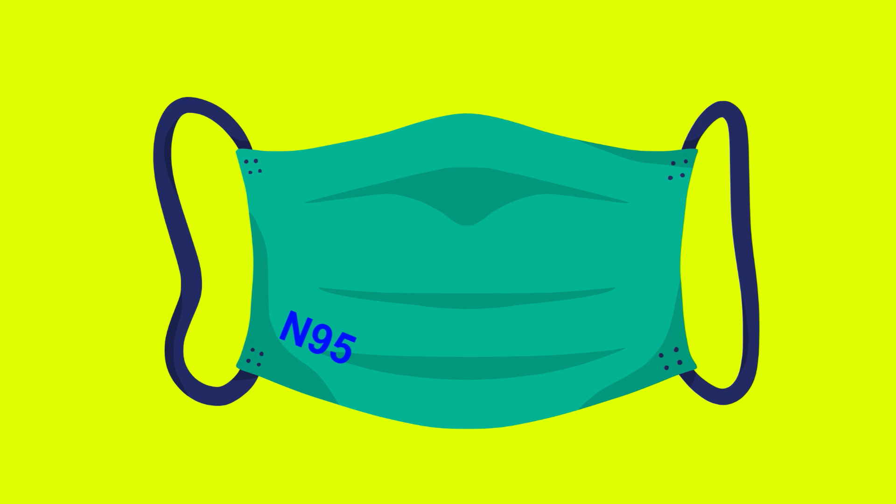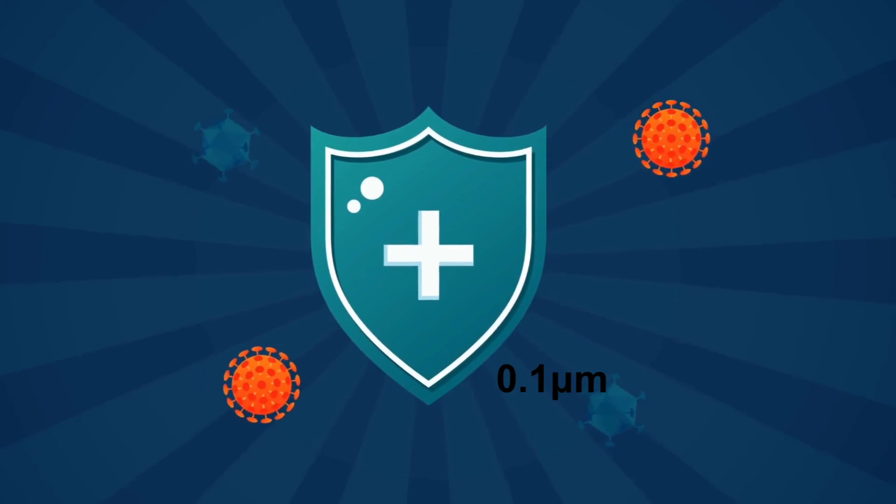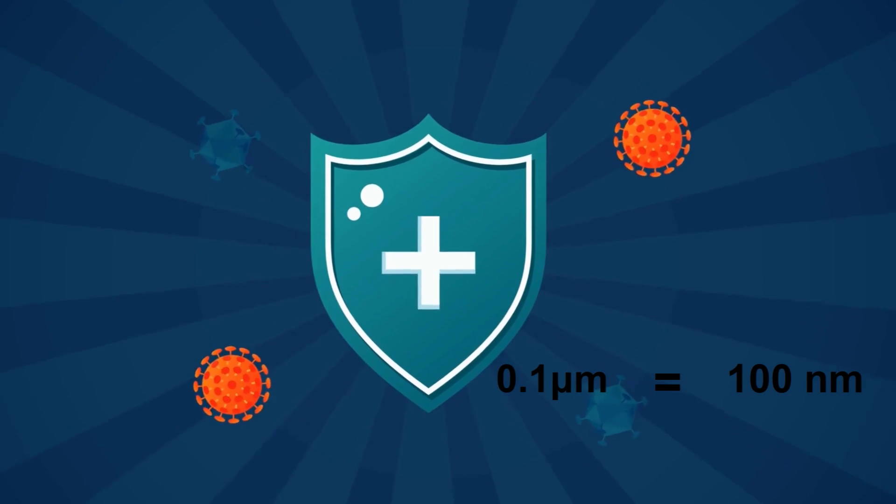Now, the question is, can the N95 masks shield us against coronavirus? Well, N95 masks are designed to filter out particles that are 0.1 micrometer, and 0.1 micrometer equates to 100 nanometers, which is the diameter of a coronavirus as we discussed earlier.